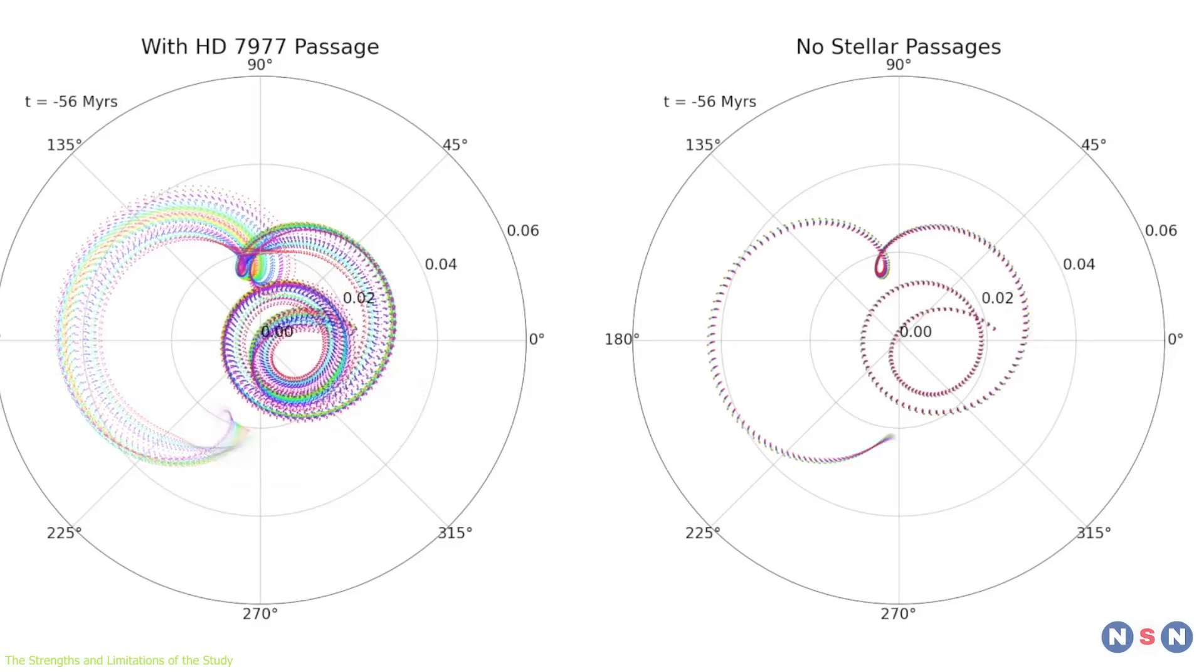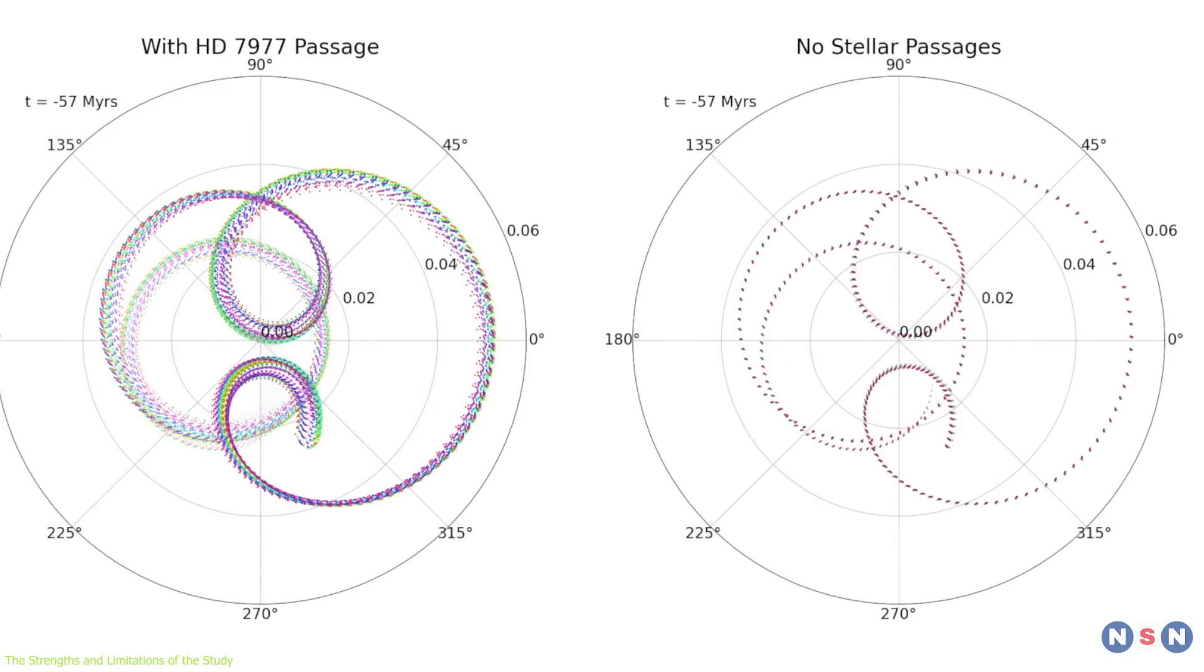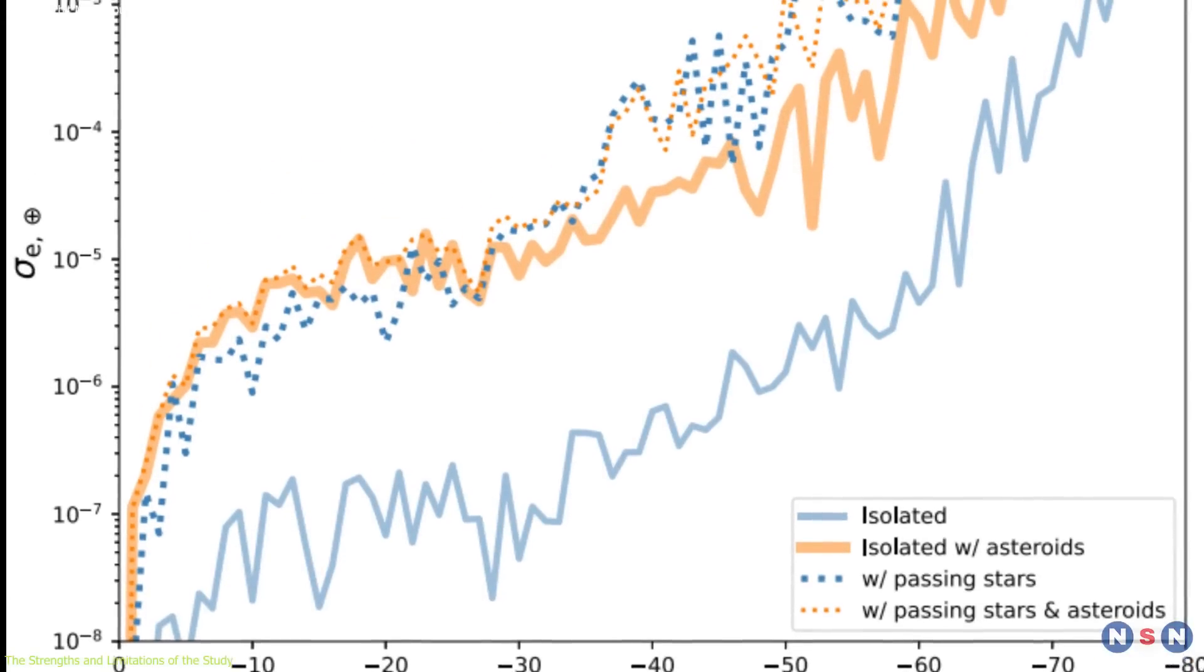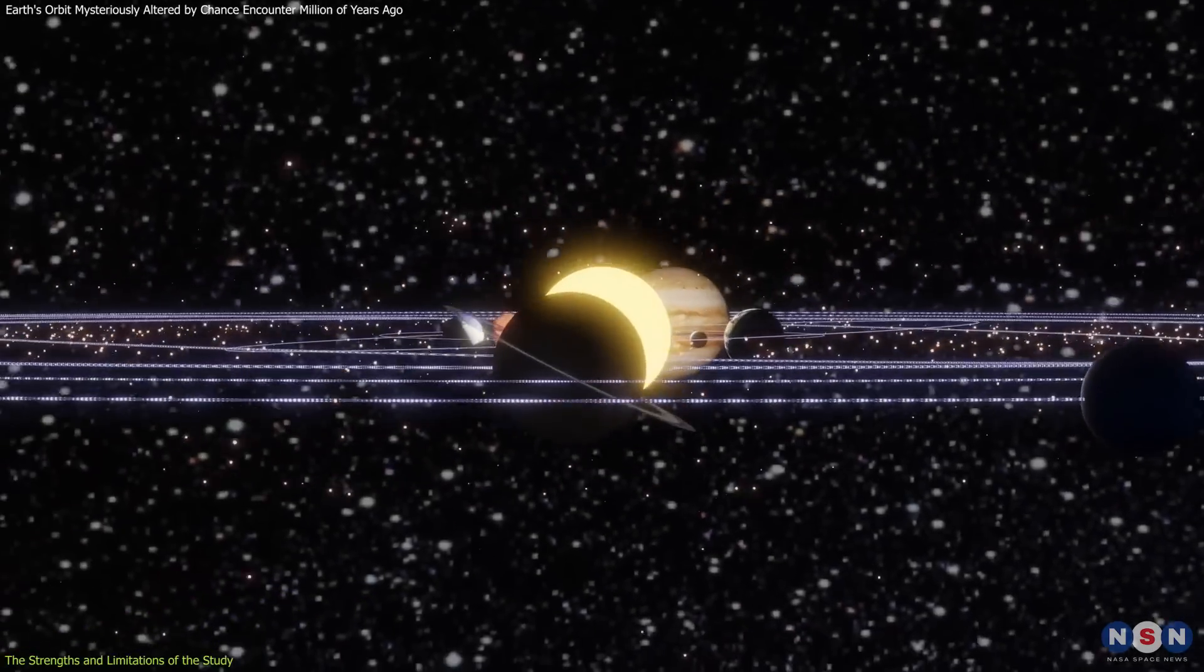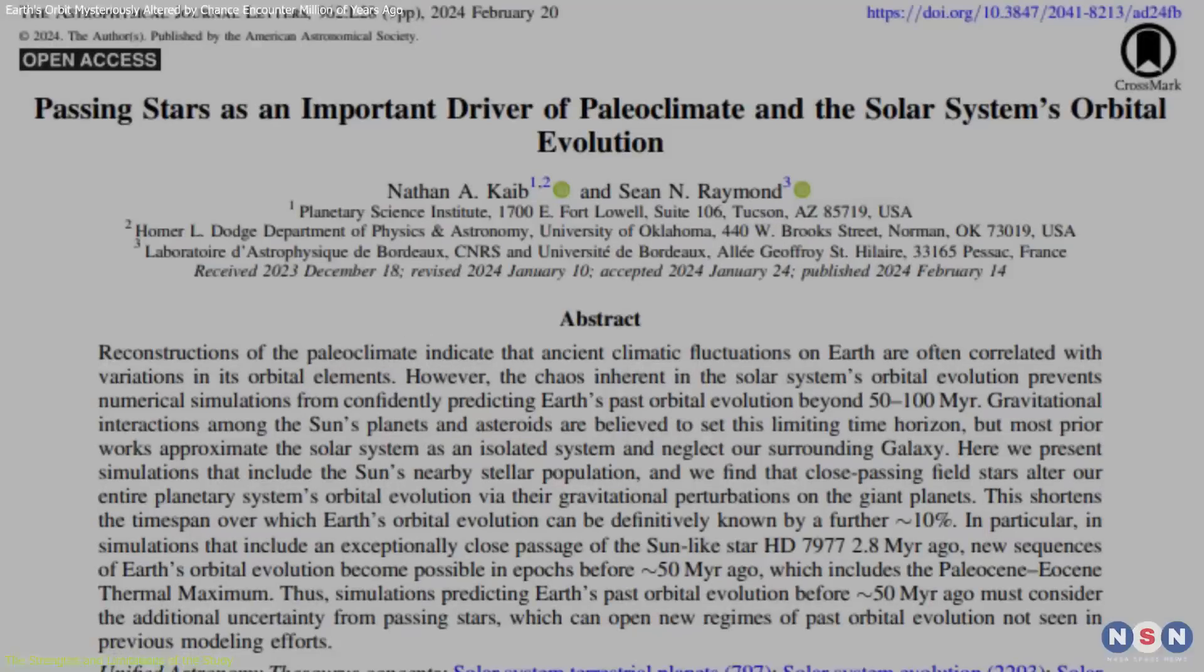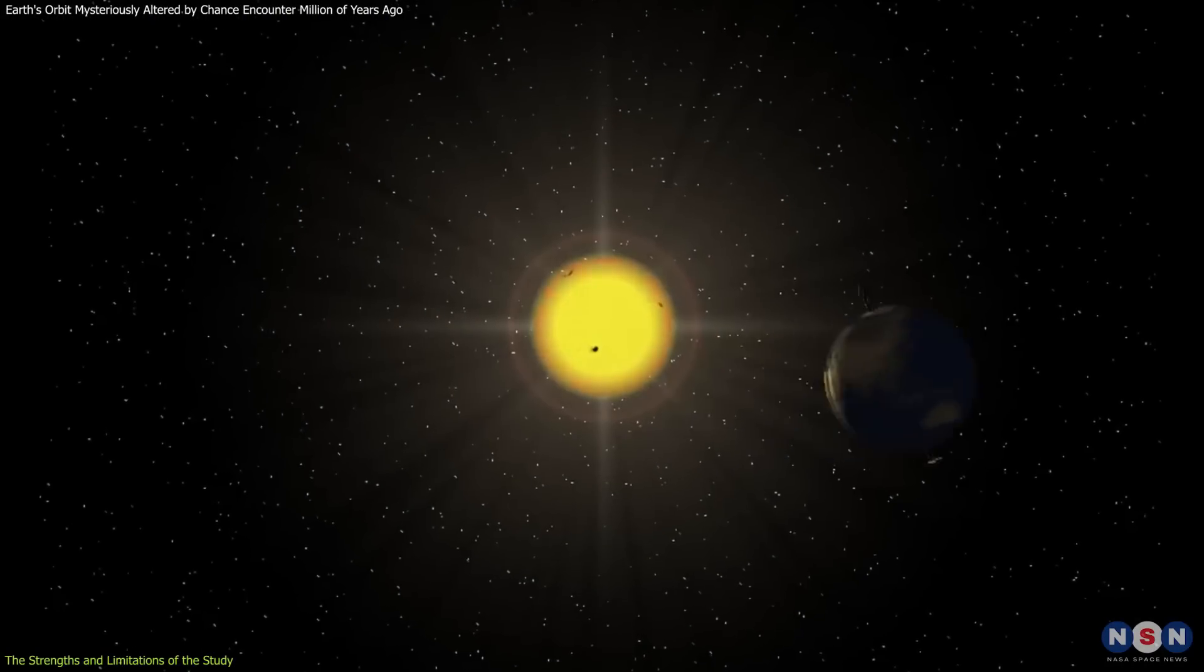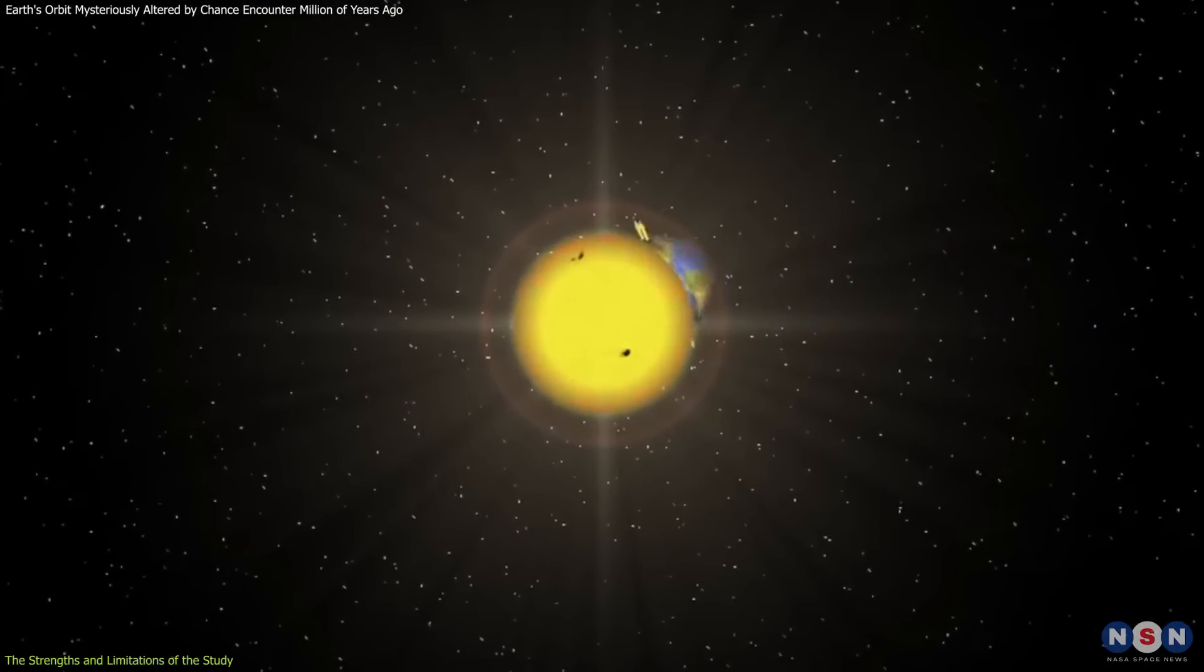One of the strengths of this study is its novelty and creativity. It is the first study to explore the effects of passing stars on the orbital evolution of the solar system and to link them to the PETM. It is also the first study to use realistic and rigorous simulations that account for the complex interactions of the solar system and the galaxy. So it opens up new avenues of research and inquiry, and challenges us to think outside the box when it comes to explaining Earth's orbital and climatic history.